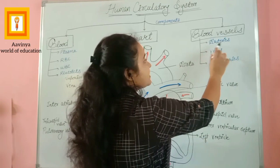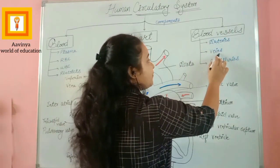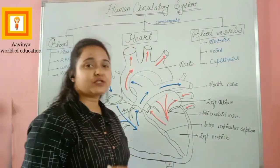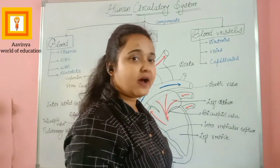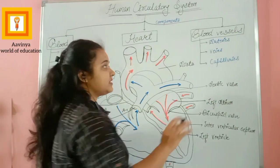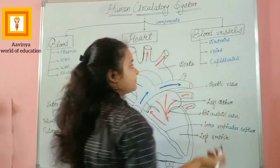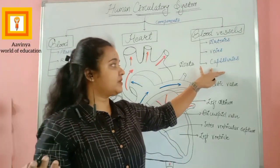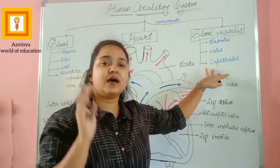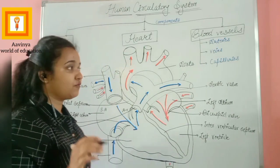Blood vessels are of three types: arteries, veins, and capillaries. Arteries carry oxygenated blood and are thicker in size. Veins carry deoxygenated blood and are thinner in size. Capillaries are the thinnest blood vessels, which help in the exchange of gases.